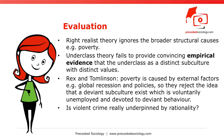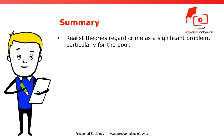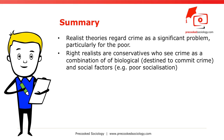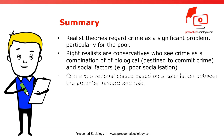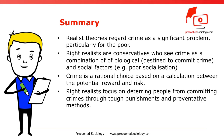In summary, realist theories regard crime as a significant problem, particularly for the poor. Right realists are conservatives who see crime as a combination of biological factors, like being destined to commit crime, and social factors like poor socialization. Crime is a rational choice based on a calculation between potential reward and risk. Right realists focus on deterring people from committing crimes through tough punishment and preventative methods.